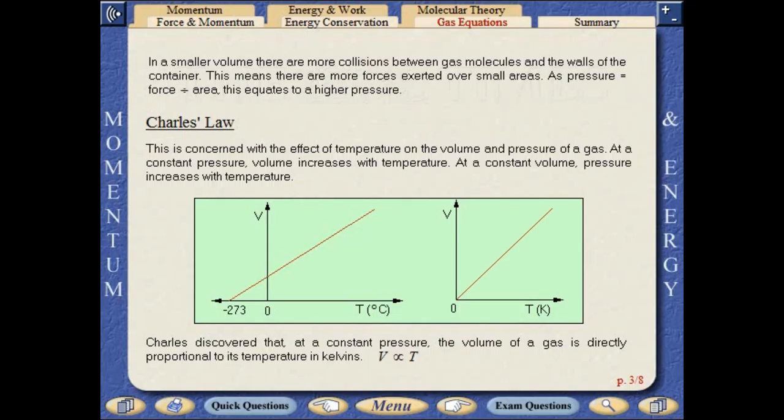Charles' law is concerned with the effect of temperature on the volume and pressure of a gas. Volume increases with temperature at a constant pressure, while pressure increases with temperature at a constant volume. Charles discovered that, at a constant pressure, the volume of a gas is directly proportional to its temperature in kelvins.